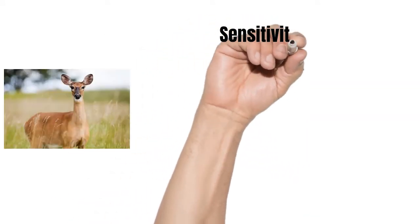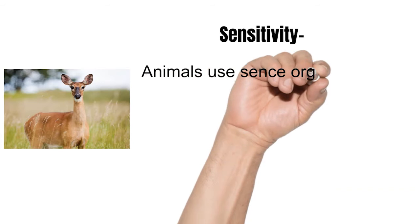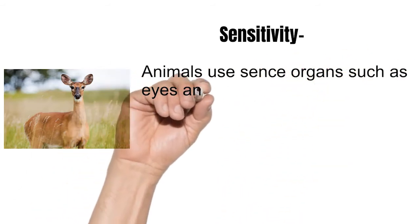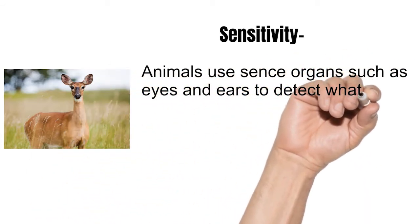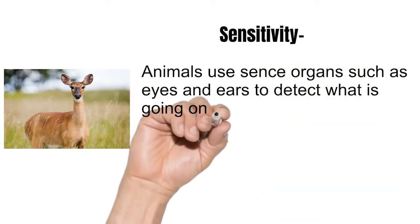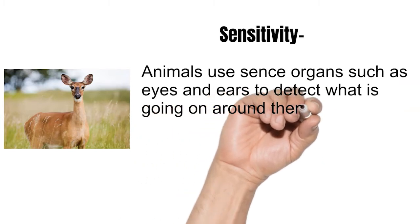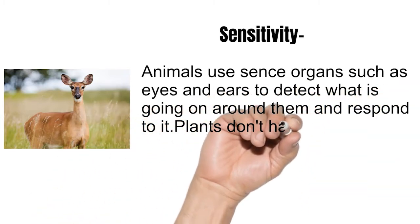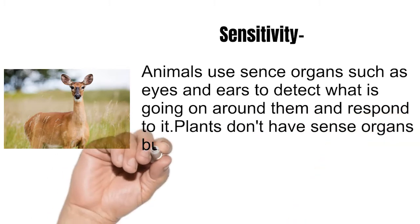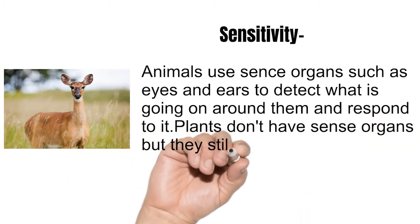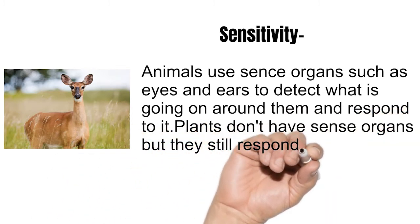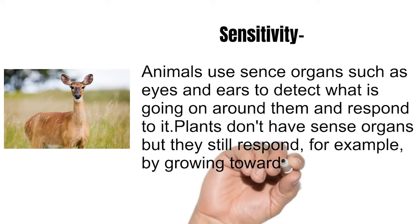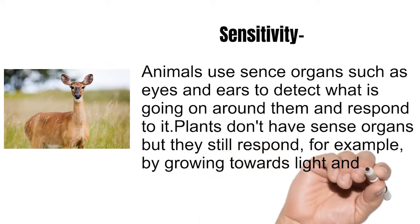Sensitivity: animals use sense organs such as eyes and ears to detect what is going on around them and respond to it. Plants don't have sense organs, but they still respond — for example, by growing towards light and water.